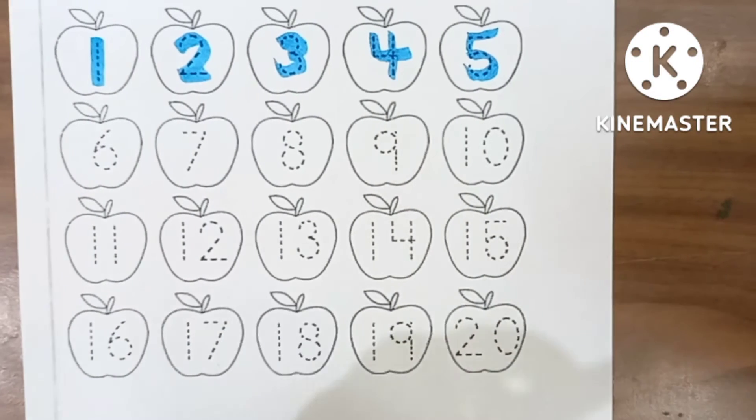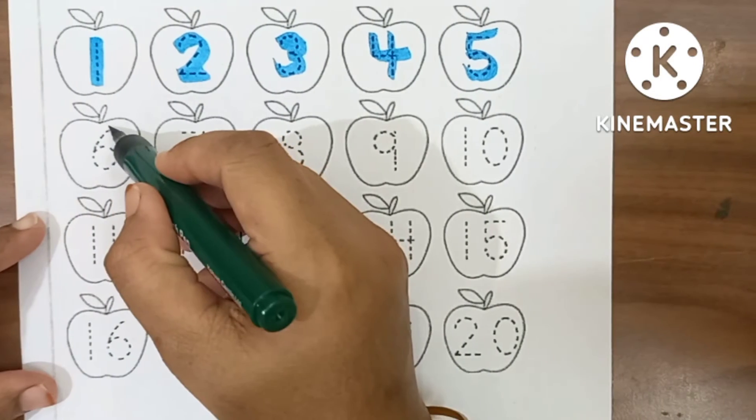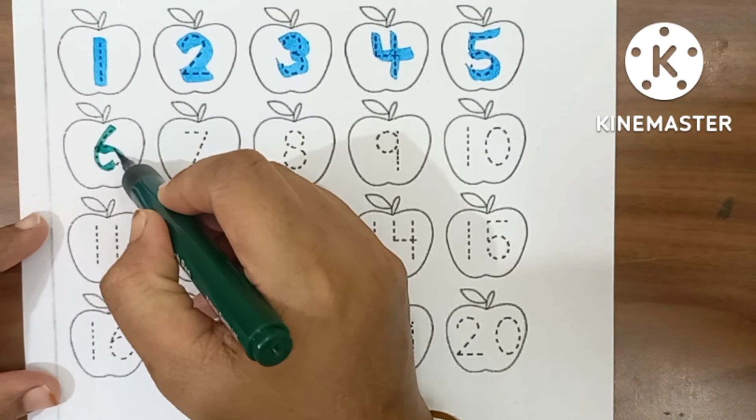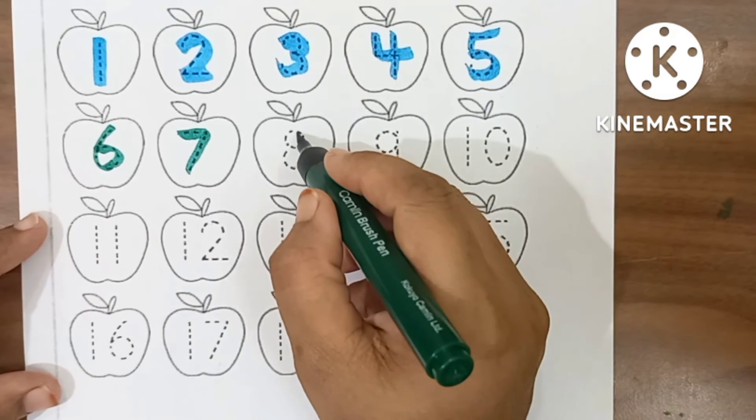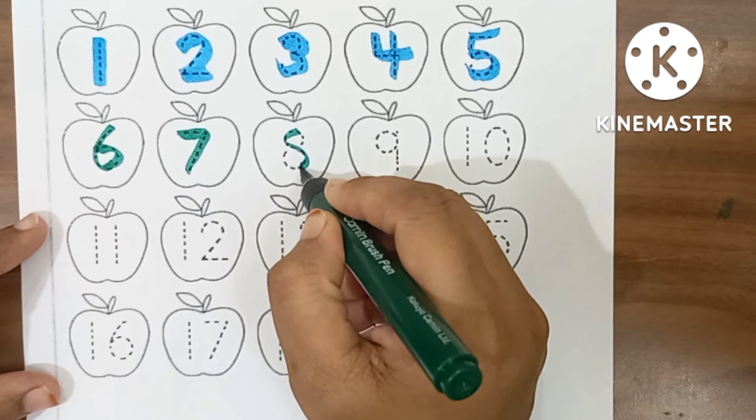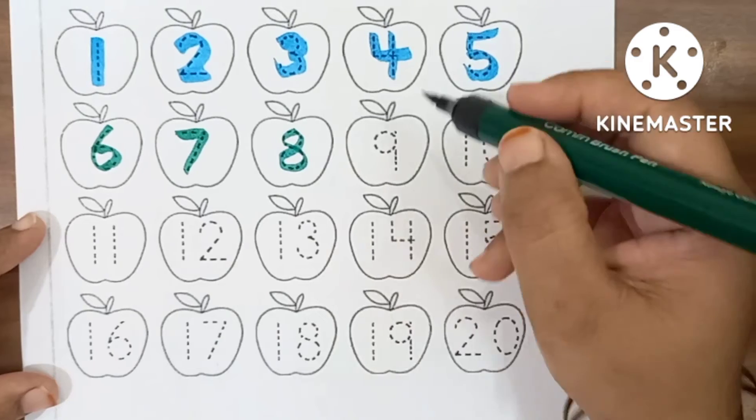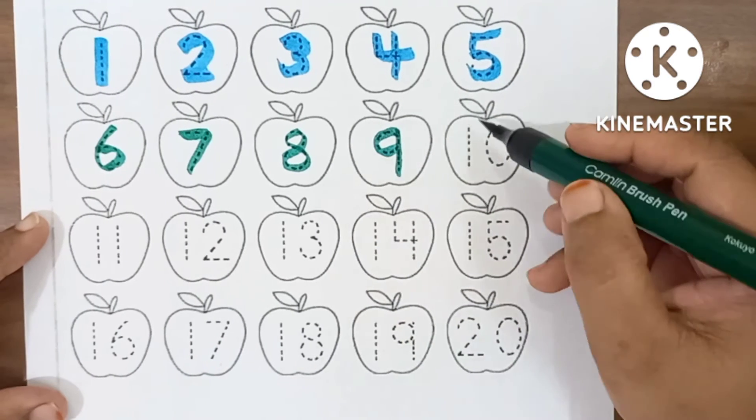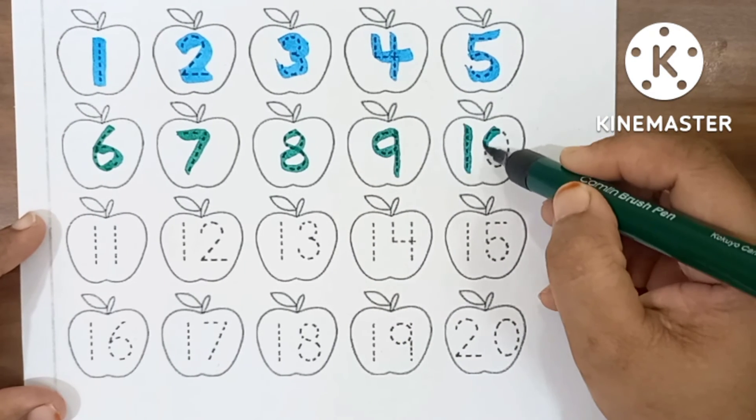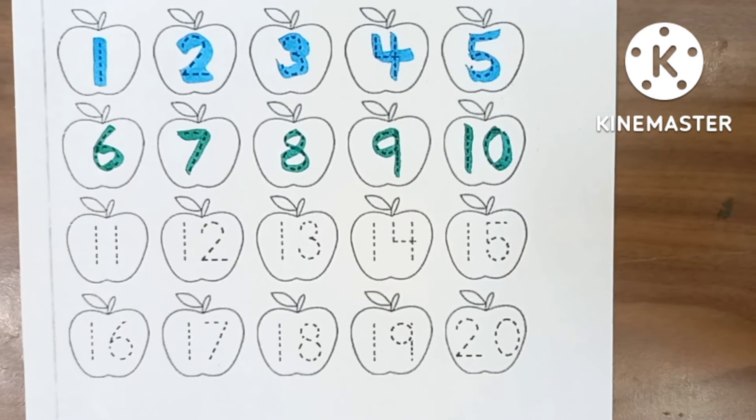Dark Green Colour. 6, S-I-X-6. 7, S-E-V-E-N-7. 8, E-I-G-H-T-8. 9, N-I-N-E-9. 1-0, 10, T-E-N-10.